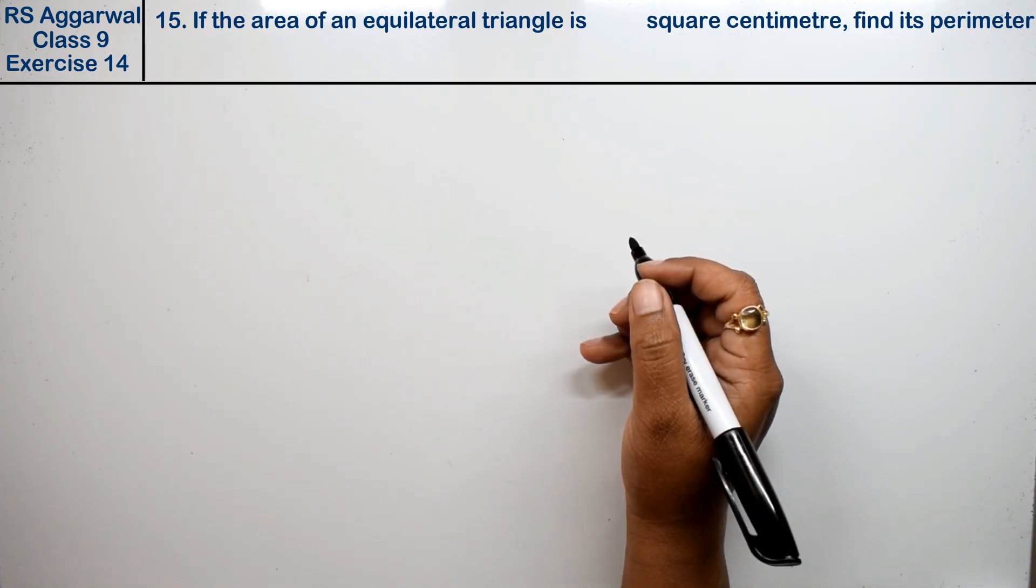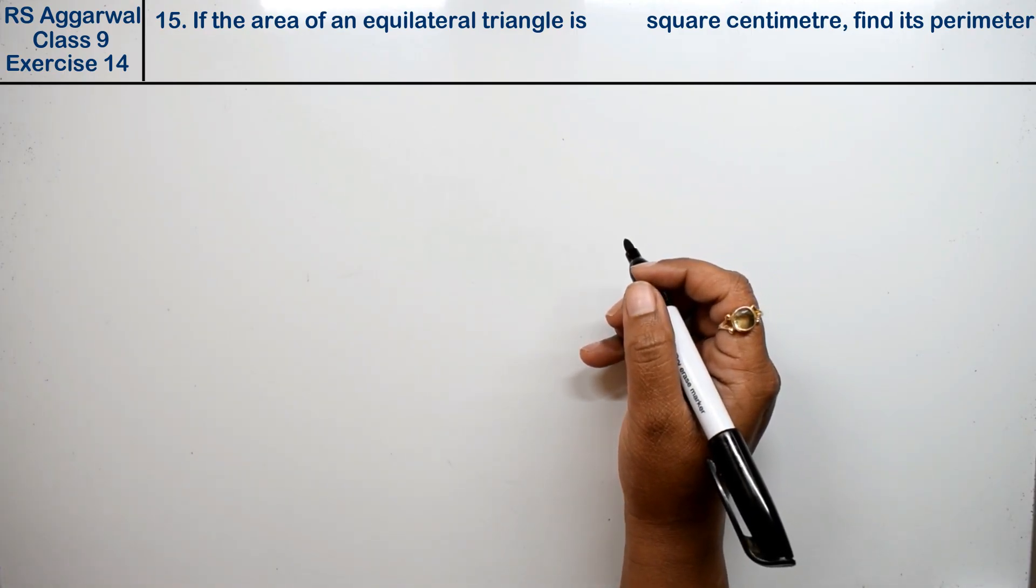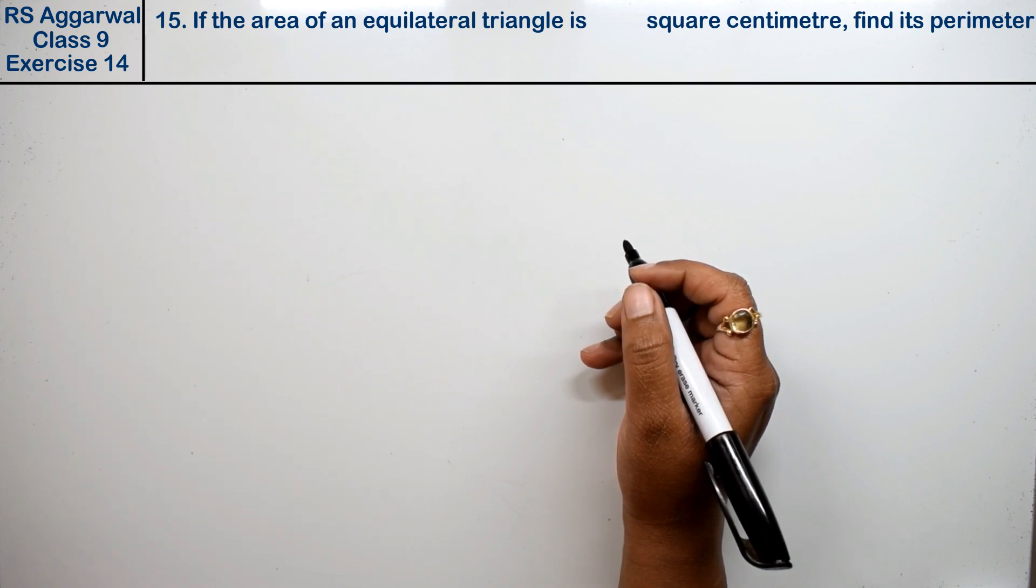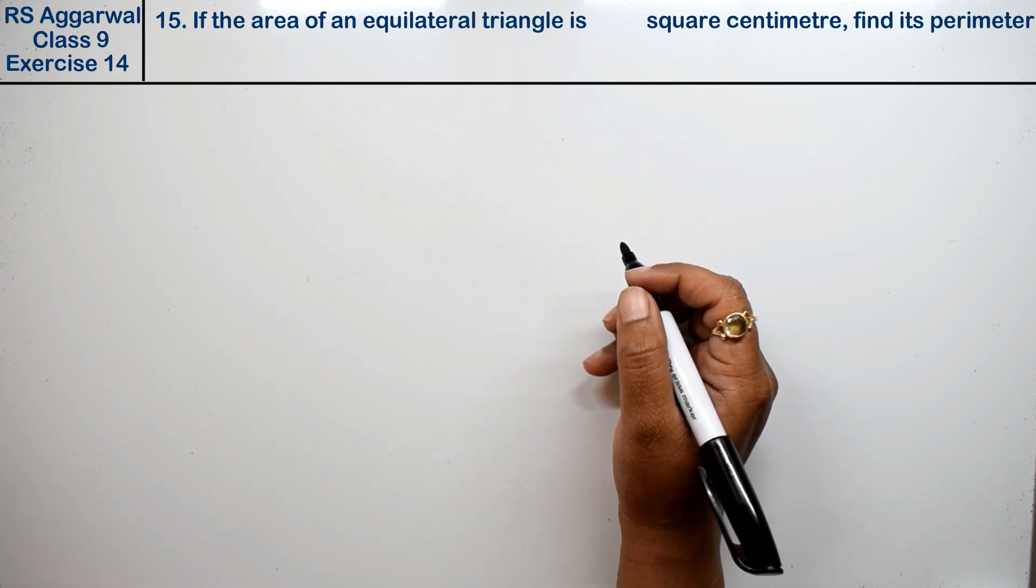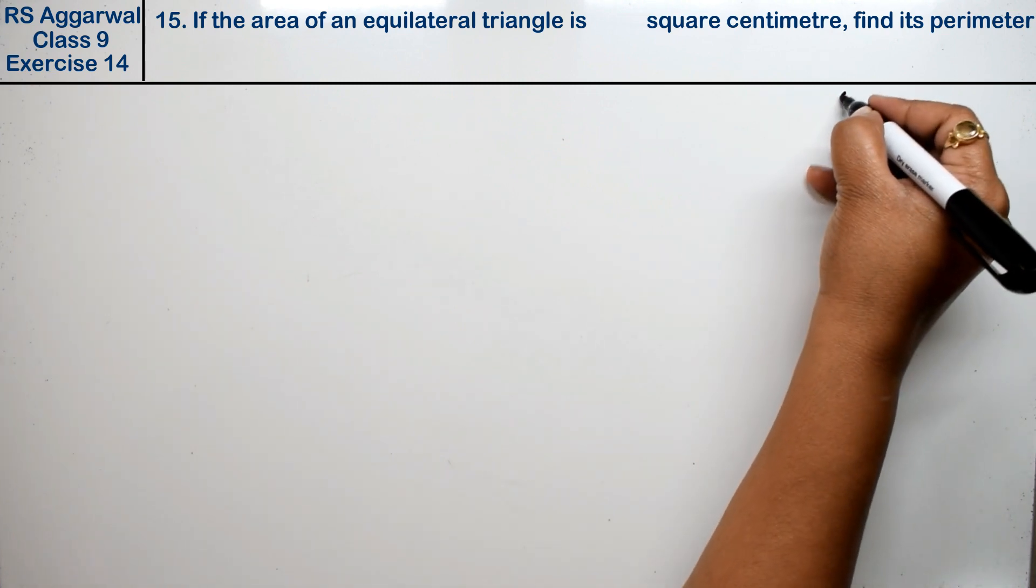Let's do question number 15 of exercise 14, that is area of triangles and quadrilaterals. Question number 15 is: if the area of an equilateral triangle is 36 root 3 cm²...